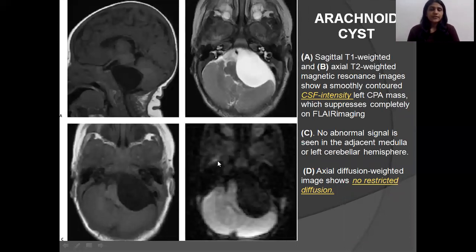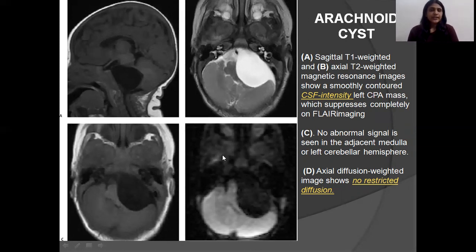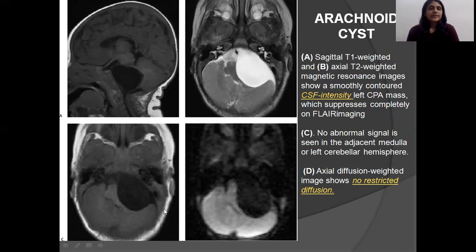Arachnoid cyst is a benign cystic lesion present in the subarachnoid space, which contains CSF. It follows CSF signal in all sequences: hypointense on T1, hyperintense on T2. On FLAIR, it is completely suppressed, and there is no diffusion restriction.